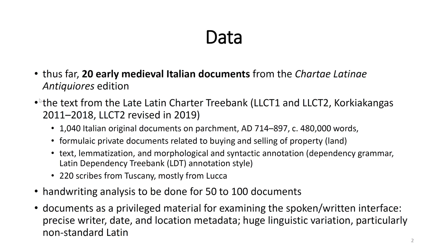The data is original private documents from Tuscany of the 8th and 9th centuries, and they are actually nice data sets because we know quite a lot about them and about their writers. We know the names, dates and writing locations. This is really luxury. The Latin of these documents is also useful for historical linguistics because it shows huge grammatical variation. The electronic text comes from the late Latin charter treebank, but the images are scans of a printed facsimile edition, the Chartae Latinae Antiquiores.